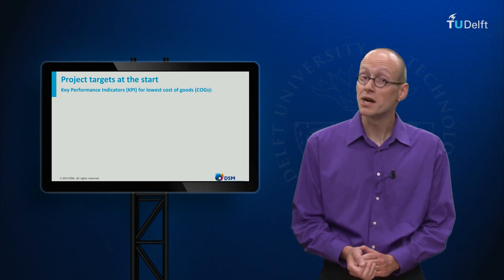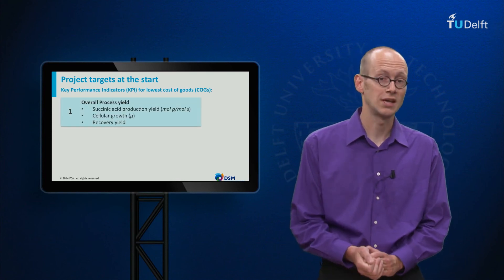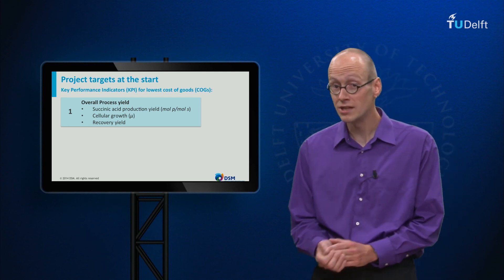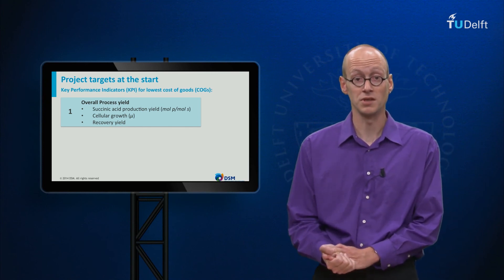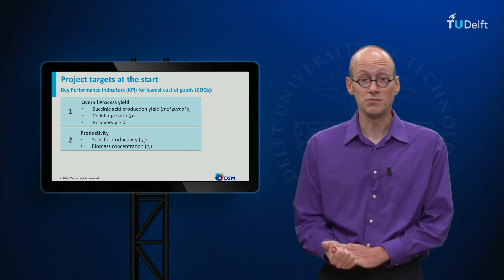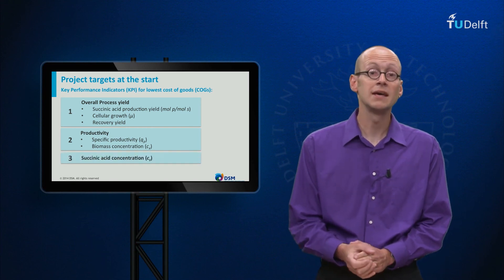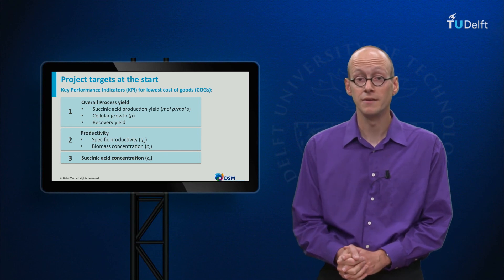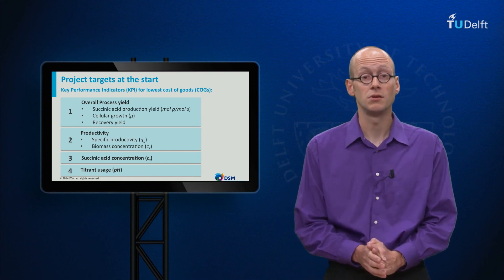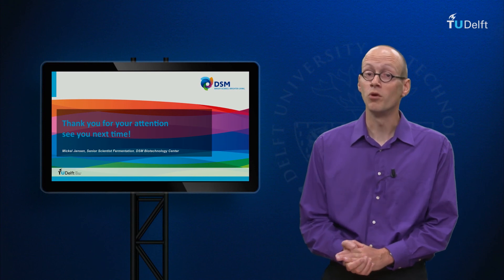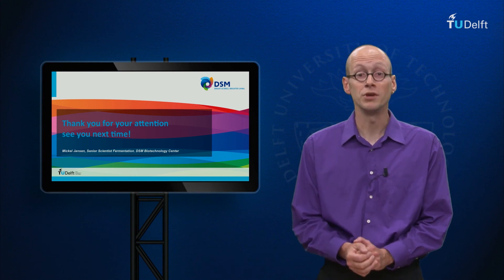Some of these KPIs might already sound familiar from previous units. A first important indicator is the process yield. This includes the succinic acid production yield, so the net conversion of sugar into the product of interest, the cellular growth being the amount of biomass needed, and the downstream process yield. Secondly, there is productivity, dependent on the applied biomass concentration and the specific production flux Qp. A third important indicator is the final succinic acid concentration in the fermenter. And the fourth element is the amount of titrant needed to control the pH in the fermentation process. In the next unit, I will explain more how important these performance indicators are, how they interact and how to choose your microorganism for production, crucial for your industrial process development.